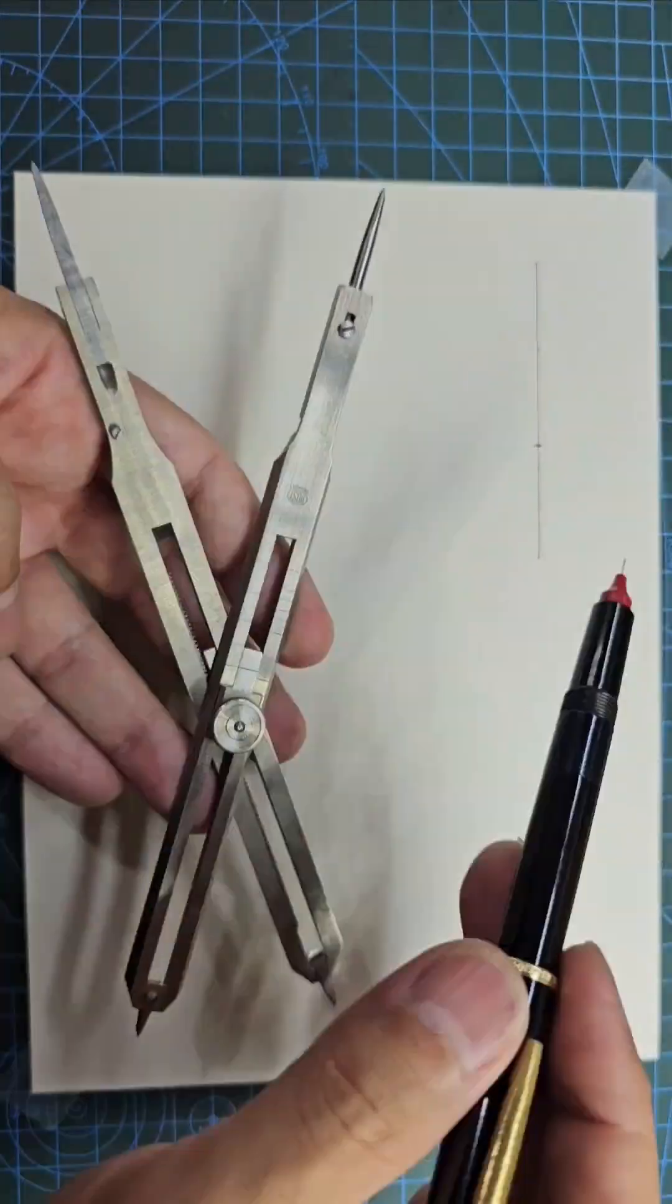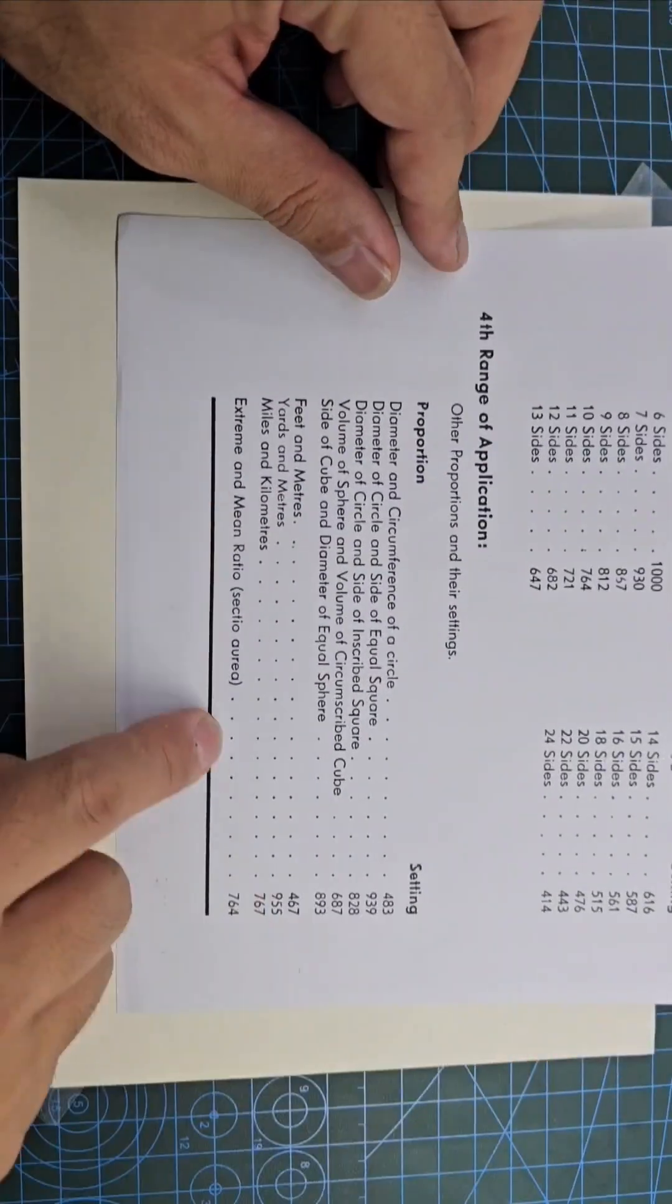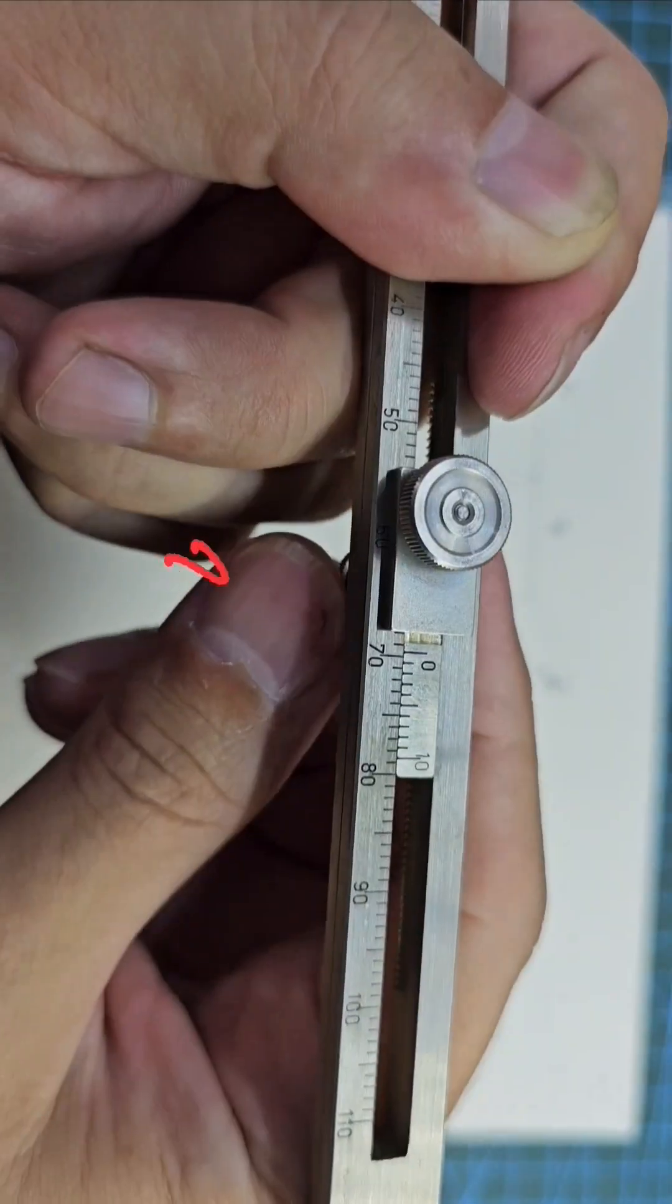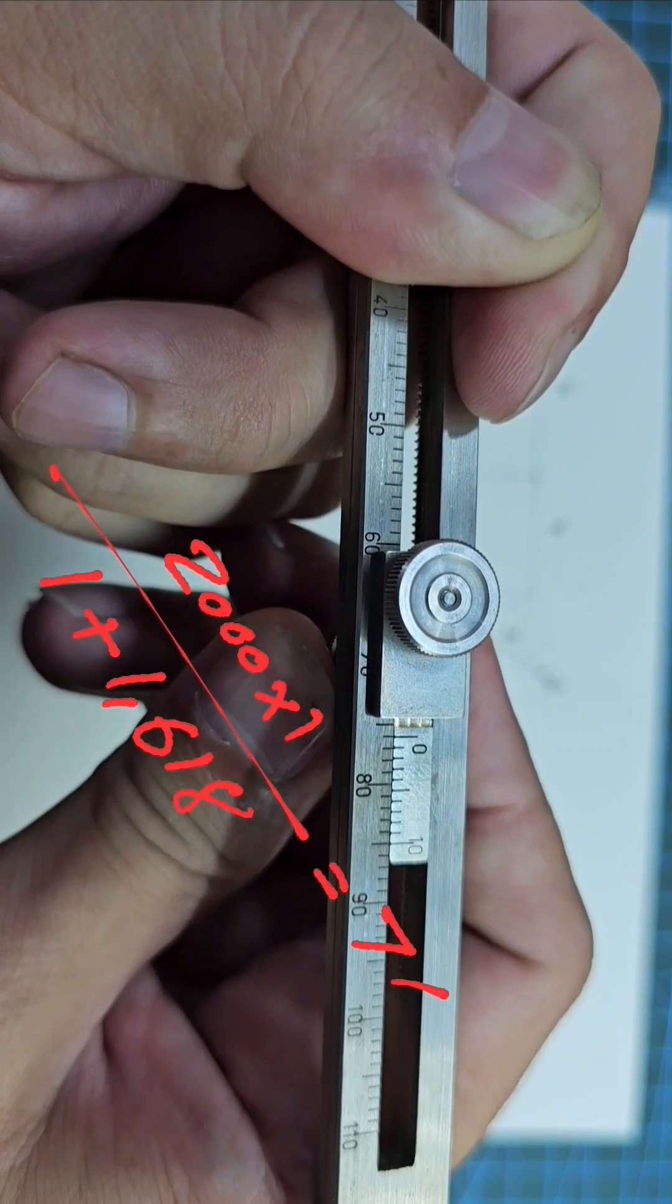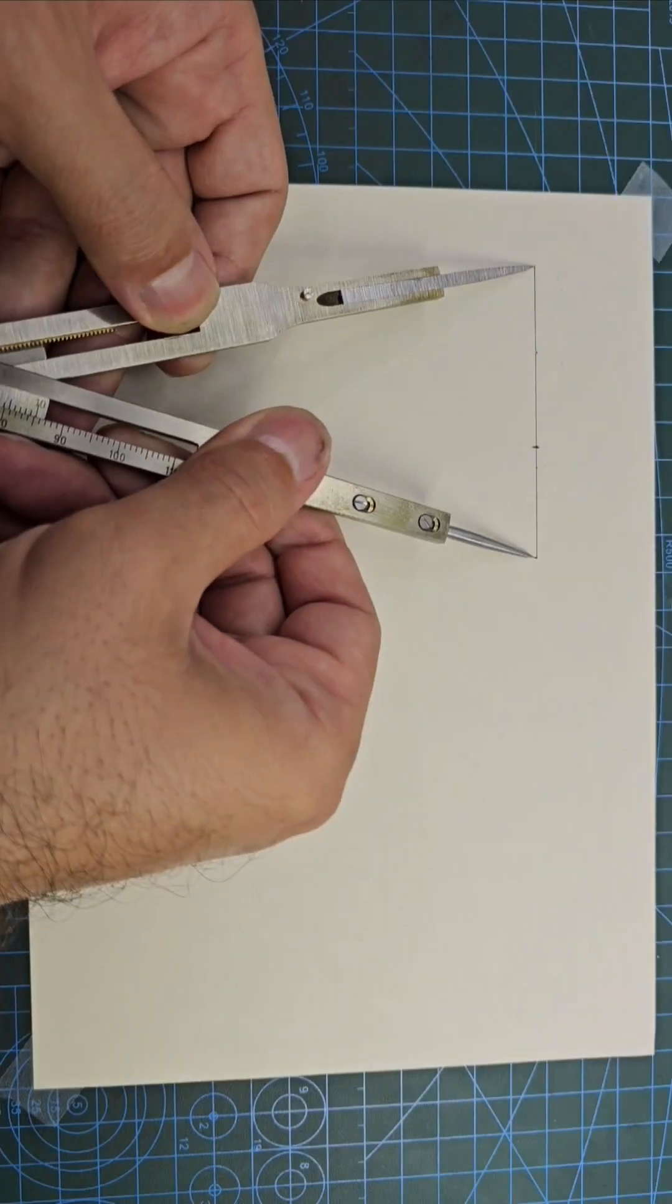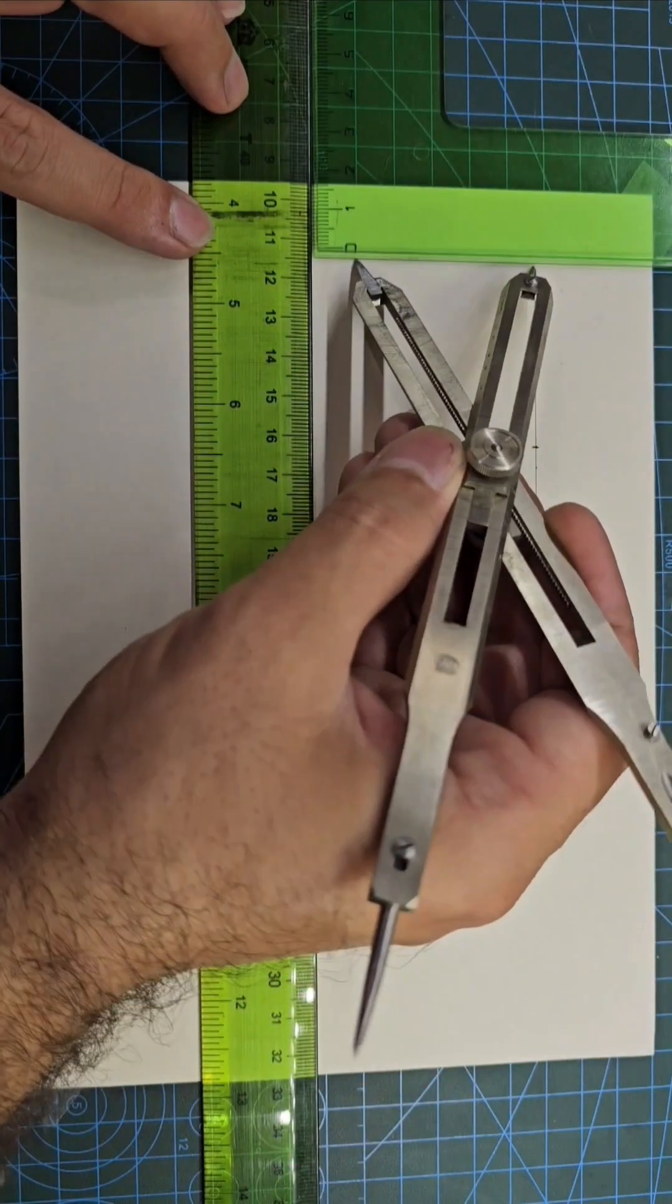To do the same task with the bigger divider, you simply find the extreme and mean ratio setting from the chart, or by using the formula, which the result is the same: 0.764.